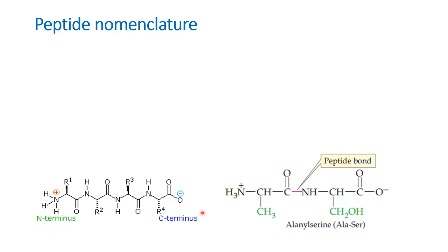In a peptide structure, every amide bond means two amino acids have come together. If there are three amide bonds, then there are four amino acids combined by three peptide bonds. The amino acid at the extreme left end is called the N-terminal amino acid, and the amino acid at the extreme right end is called the C-terminal amino acid.